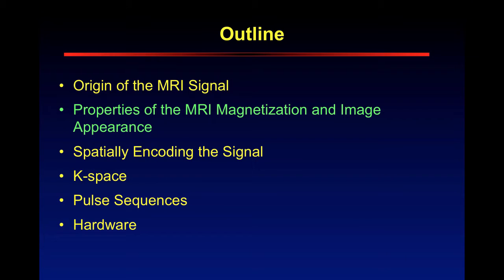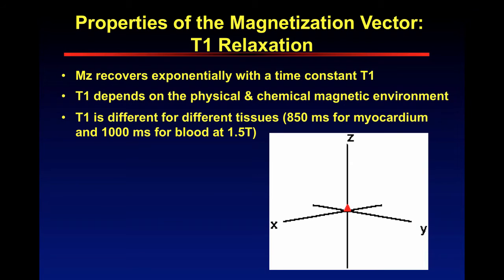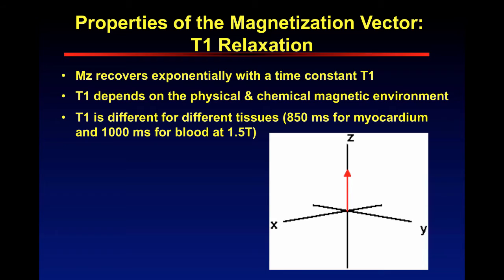Now we know the origin of the MRI signal — the aligning of the protons along the magnetic moment, then adding energy via an RF pulse to move some of those from the low-energy state to the higher-energy misaligned state. Let's talk about the properties of the MRI magnetization and image appearance. The first part is T1 relaxation. The Mz — this is the magnetic vector — recovers exponentially with a time constant T1. When it's tipped down into that transverse plane, after you remove the RF energy, the net magnetization vector is going to recover at a time constant, and that time constant is T1.